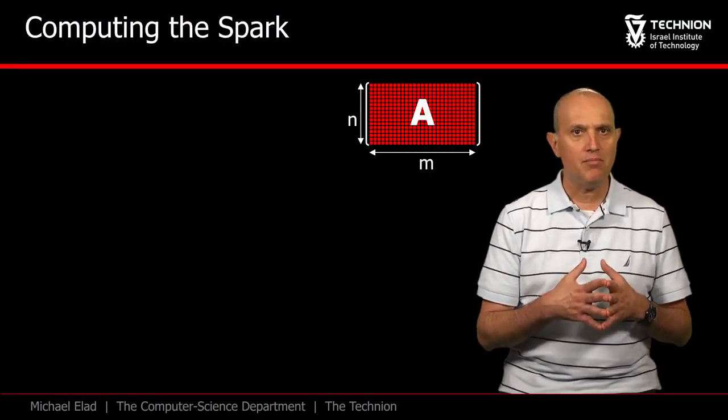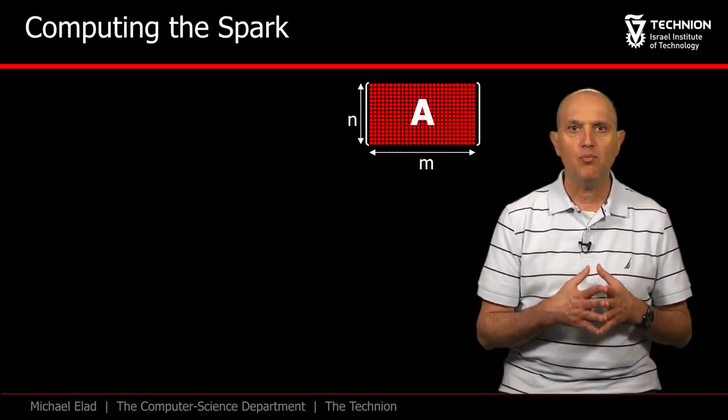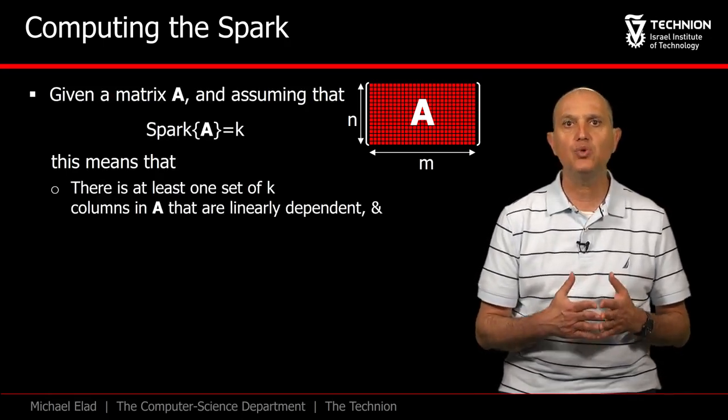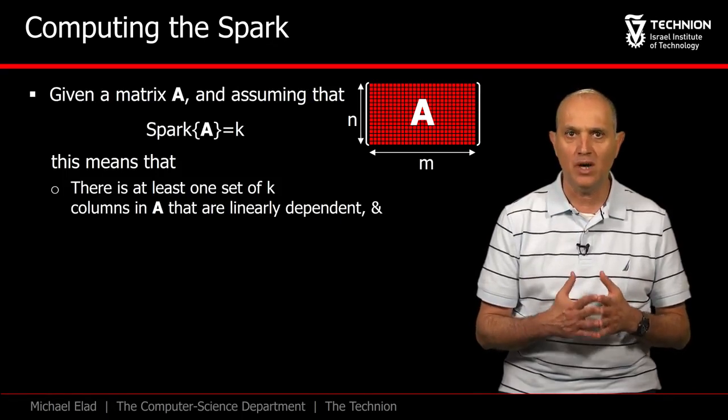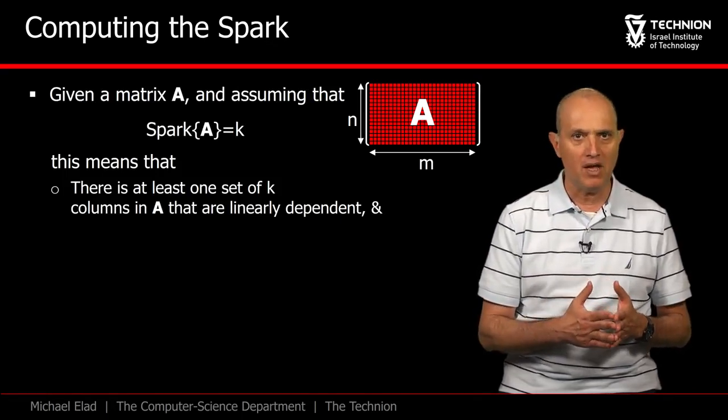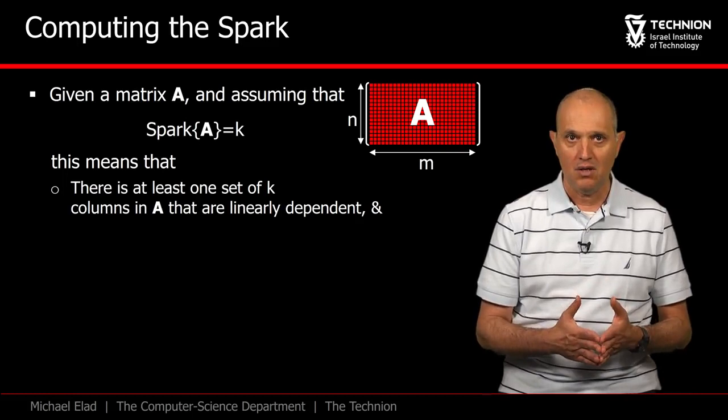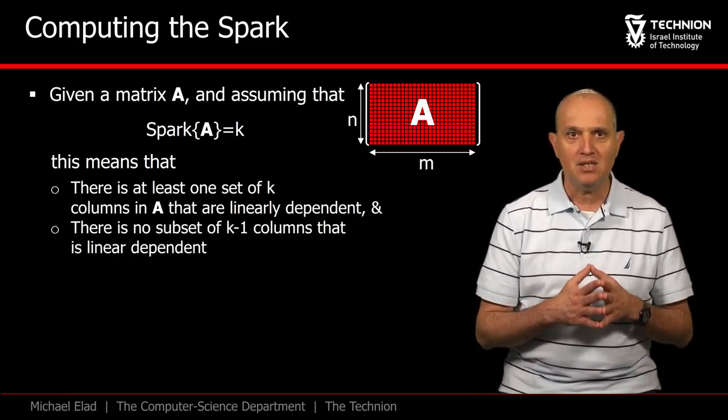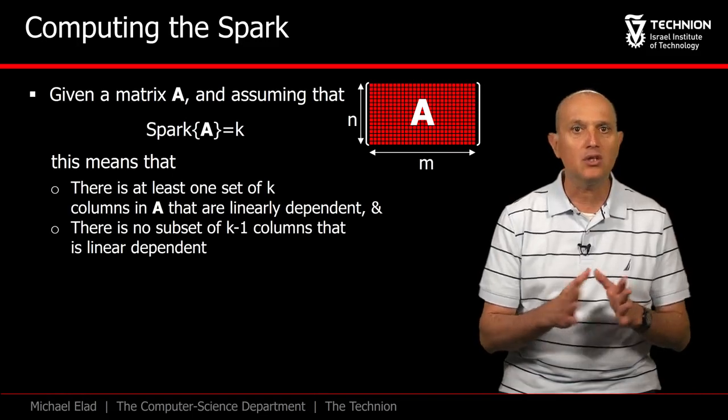If we are given a matrix A, how can we compute its spark? If the spark is assumed to be k, this implies that we should be able to find at least one set of k columns from A that are linearly dependent. But furthermore, this also says that a dependent set with k minus 1 columns cannot exist.